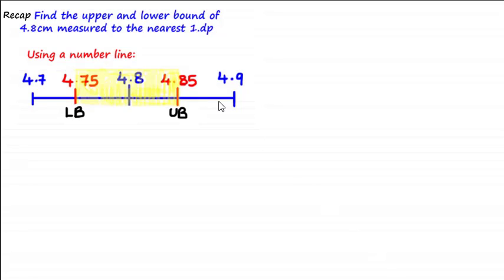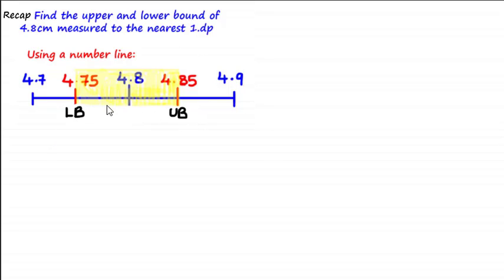Welcome to the second tutorial on calculating upper and lower bounds where the degree of accuracy is either a decimal place or a significant figure. In the last tutorial we learnt how to calculate upper and lower bounds of rounded values using a number line, placing the estimated value in the middle, then finding the next values up and down using the degree of accuracy, and subsequently calculating the lower and upper bounds by finding the midpoints.